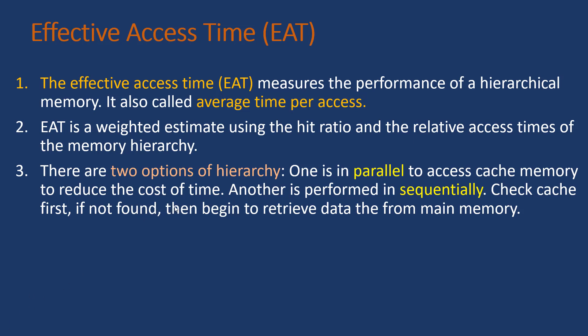There are two options for the hierarchy. One is parallel access: the CPU starts access to the cache, and at the same time starts another access to another level of memory simultaneously. If the data is found in the cache, the access to the other memory level is automatically terminated, so there is no cost for the overlap. If data is not found in cache, the access to the other level has already started, so this overlap reduces the cost of time and increases performance.